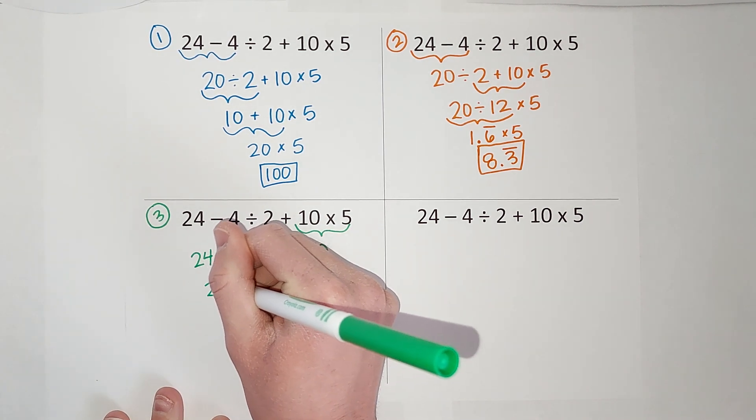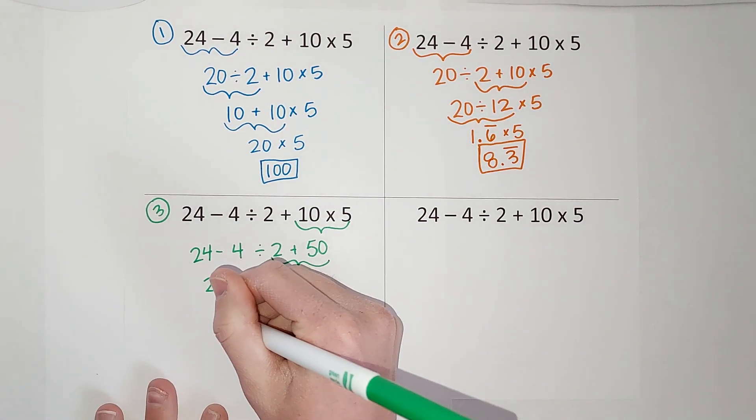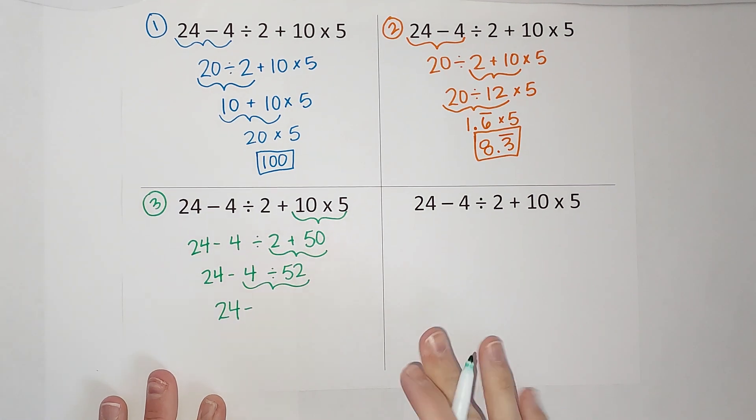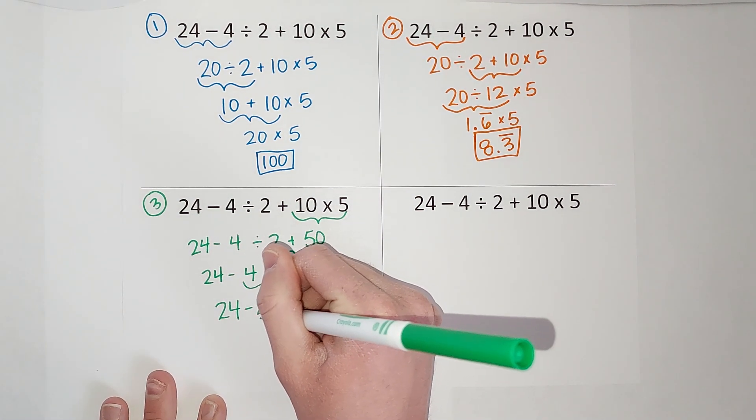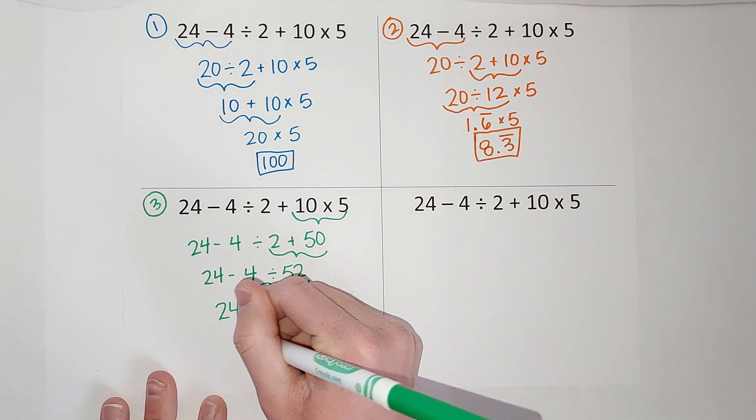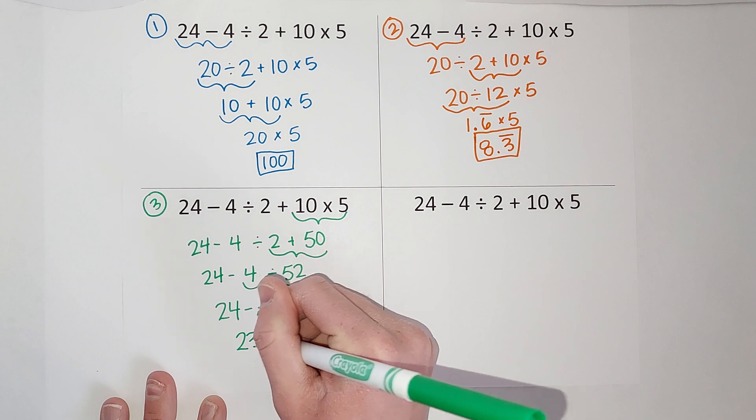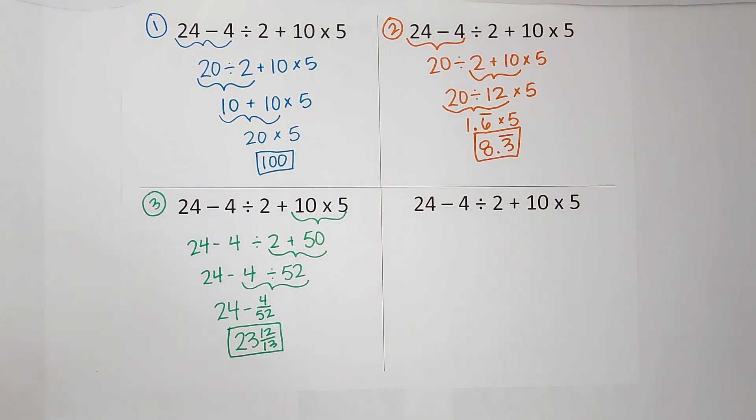He kept going right to left, got 52. You're probably getting what we're doing here. Then he divided: 24 minus—this gives you an ugly decimal, so we're just going to write it as 4 over 52. When you subtract and simplify that, you get 23 and 12/13ths.